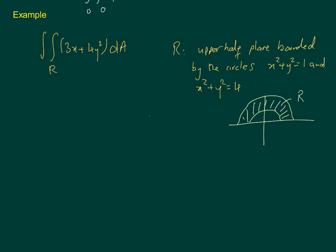For this integral of 3x plus 4y squared, our region R is represented as follows. Theta is clearly between 0 and pi — not 0 to 2π — because we're going from 0 up to π for the half circle. So your angle is 0 to π. On the other hand, your radius starts at 1 and goes to 2. So r is between 1 and 2.